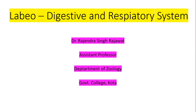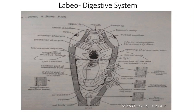Hello everyone, today in this video we will discuss about the digestive and respiratory system of Labio. This is the diagram of the digestive system of Labio. First we will discuss about the alimentary canal and then we will discuss about the digestive glands.